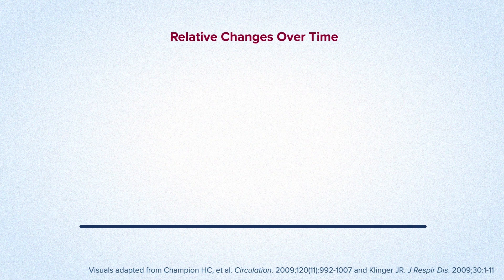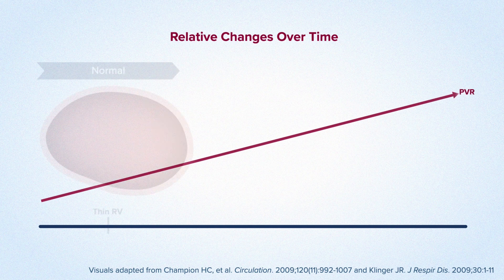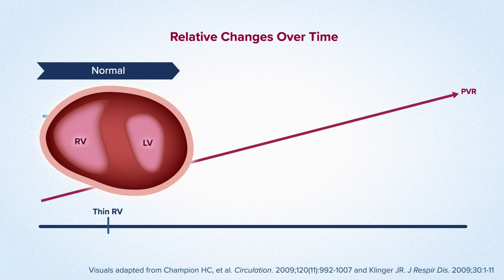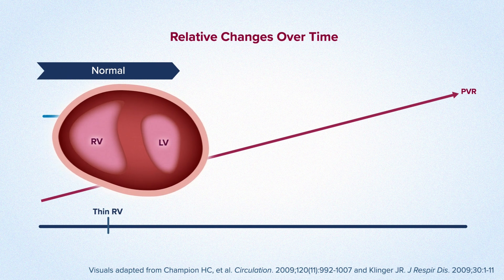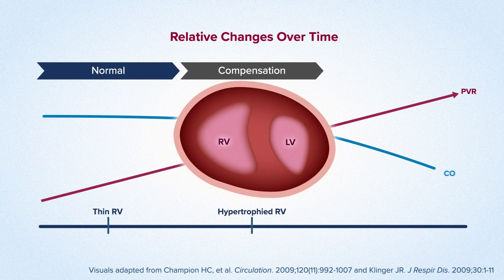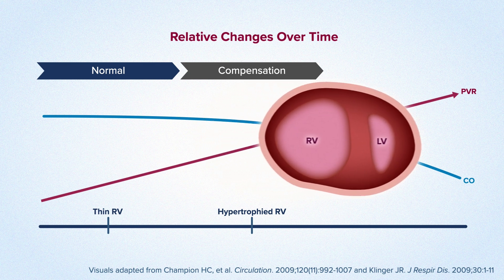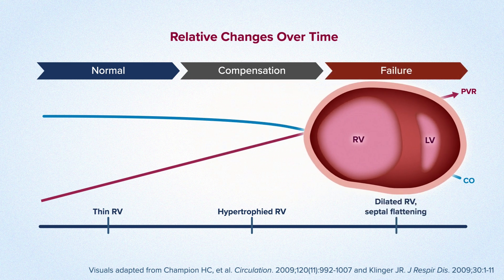While the heart can initially compensate, the progressive increases in pulmonary vascular resistance, or PVR, overloads the right ventricle, ultimately leading to decreases in cardiac output and right heart failure.